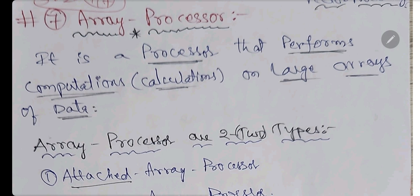Now we will go with the other type - the array processor. Here we will also get the scientist name: MJ Flynn. This is also a short answer question. We will cover two short answer questions: one is what is parallel processing, and the second is what is array processor.